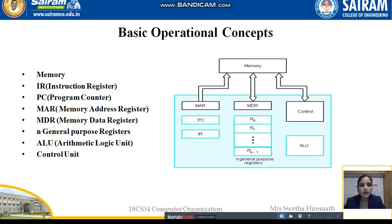Along with the control unit and the ALU unit in the processor, there are five different registers which are used for different purposes. We will now see what those five different types of registers are.